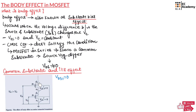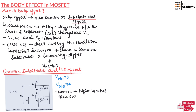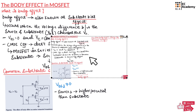In the second NMOS transistor, the source is connected to the drain of the first transistor, which is not connected to ground. Hence, the voltage between the source and substrate in the second transistor will not be equal to 0 — VBS for the second transistor will be non-zero. This will cause the body effect.